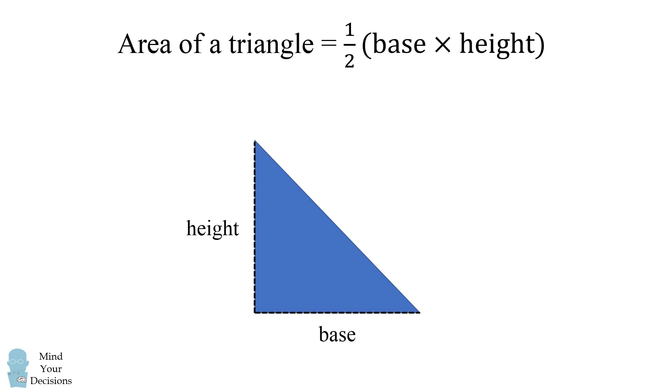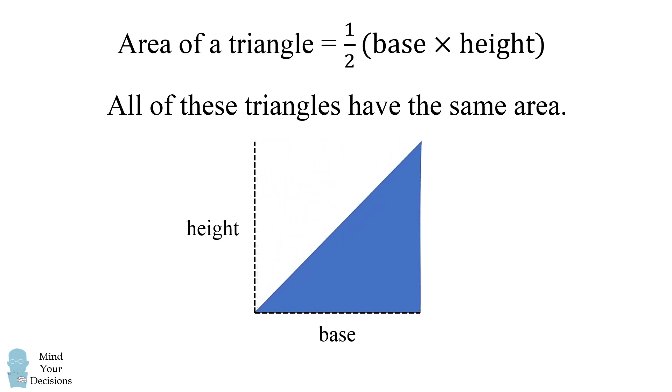But this is true for any triangle, it doesn't have to be a right triangle. So all of the following triangles actually have the same area because they have the same dimensions for the base and the height. So how can we use this principle to solve the problem?